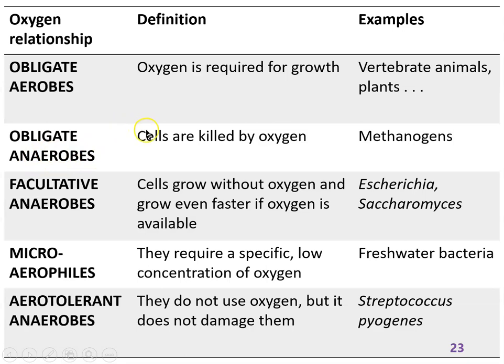The opposite is an obligate anaerobe — they are killed by oxygen. The bacteria that make methane in your distal colon, in sediments, flooded soils — those methanogens are killed by oxygen. Then in between, facultative anaerobes are also common — they don't need oxygen to grow, so if there's no oxygen they're still okay, but if oxygen becomes available they use it and it helps them.